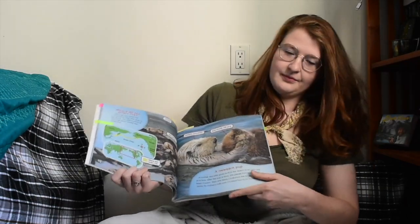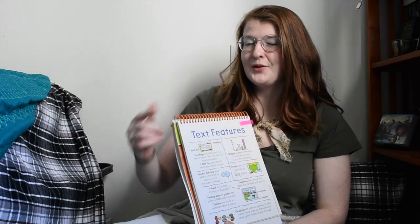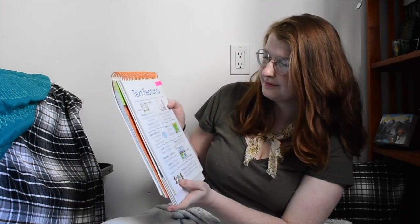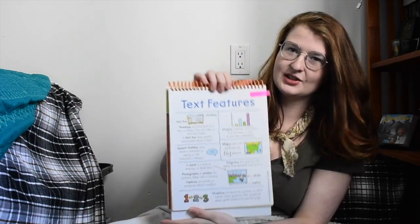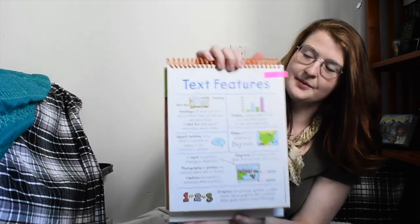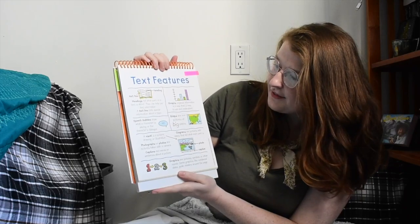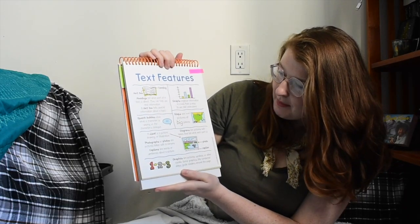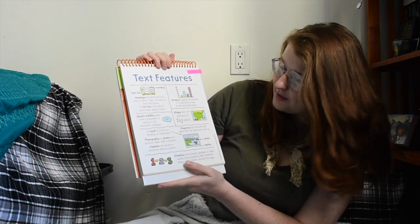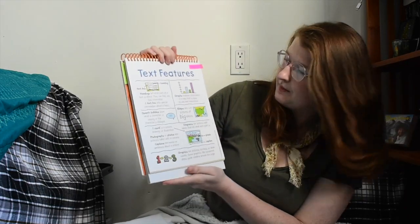So we're going to review some text features — what they are — so when you're reading the story today, you can find them. Text features include headings, fact boxes, graphs, maps, speech bubbles, and more.